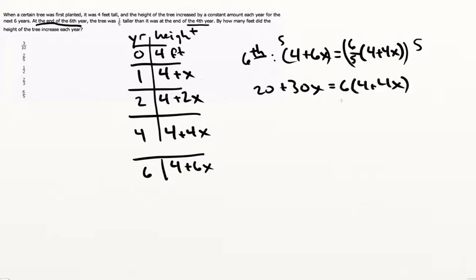24 plus 24x equals 20 plus 30x. Six x equals four, so x is four over six or two over three.